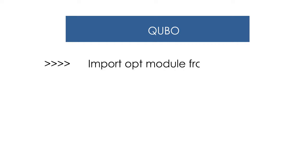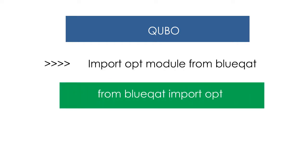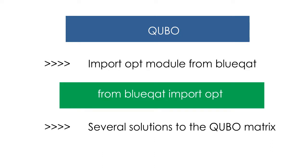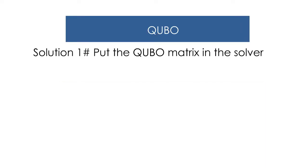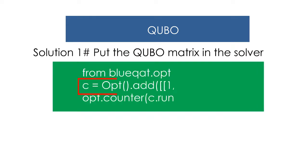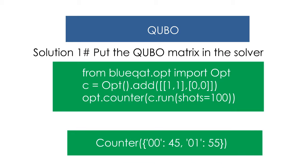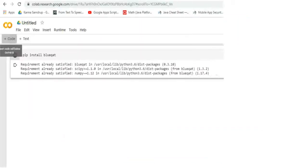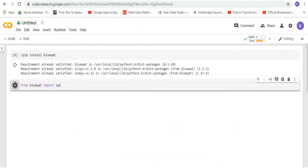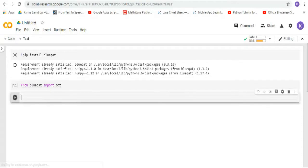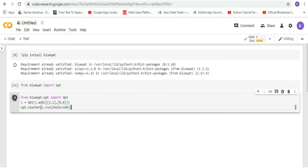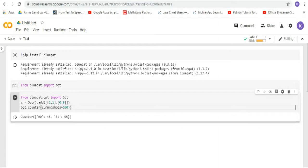We'll be importing the opt module from BlueQubit to solve the optimization problem. There are several solutions for the QUBO matrix. Solution 1 is to put the QUBO matrix directly into the solver. When we run this in Google Colab, we get the output. Let's try it out — run this. We can see that we have the same output.